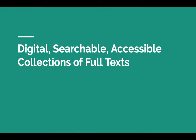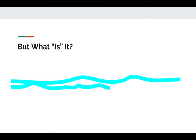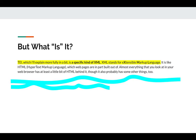Digital, searchable, and accessible collections of full texts — kind of like JSTOR or Project Muse, which you might already be familiar with — are also operating in this world of XML. TEI, which I'll explain more fully in a bit, is a very particular kind of XML. XML stands for Extensible Markup Language. It's a little bit like Hypertext Markup Language or HTML, which web pages are mostly built out of.